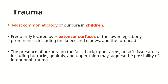Trauma is in fact the most common etiology of purpura in children. This kind of purpura is usually located on extensor surfaces and close to bony prominences, on areas where children are prone to get hurt. There are signs which may suggest intentional trauma, and for medicolegal purposes one must look for purpura on unusual sites like the face, back, or upper arms.